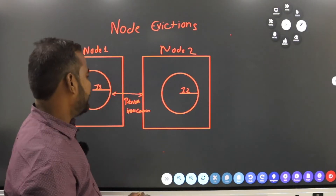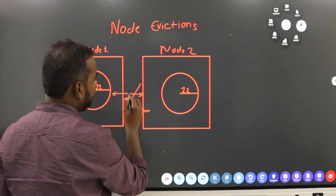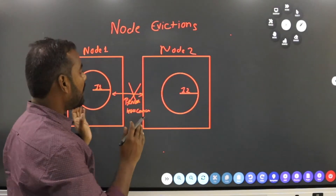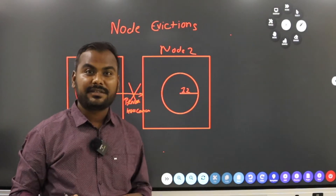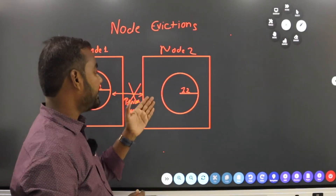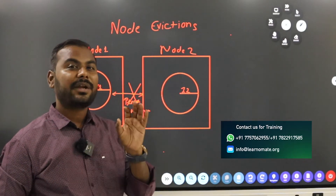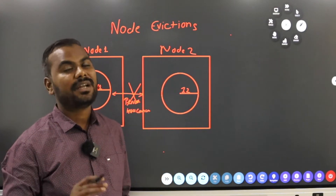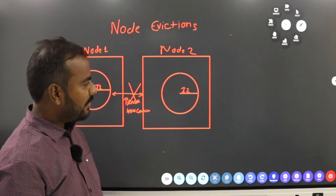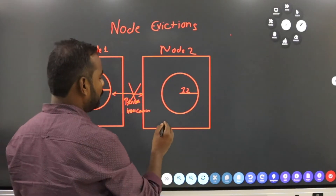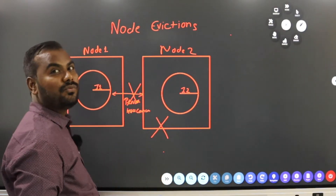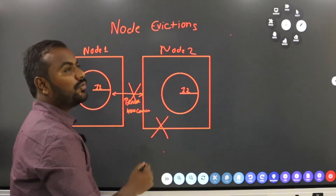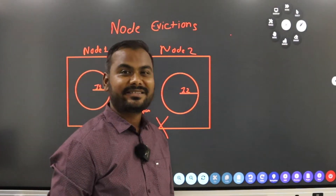Now, let's take an example where this interconnect is not working. Node one and node two are not able to communicate with each other. This communication normally happens with the help of the private interconnect, but now the problem is that this private interconnect is not working properly — there is some problem.